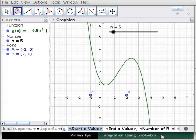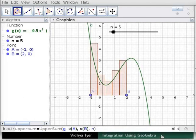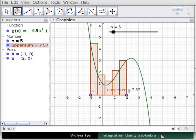Type g instead of highlighted function. Press tab to highlight start x value. Type x(a) in parenthesis. Similarly, type x(b) in parenthesis for end x value and n as number of rectangles. Press enter. Note that 5 rectangles appear between x equals -1 and 2.